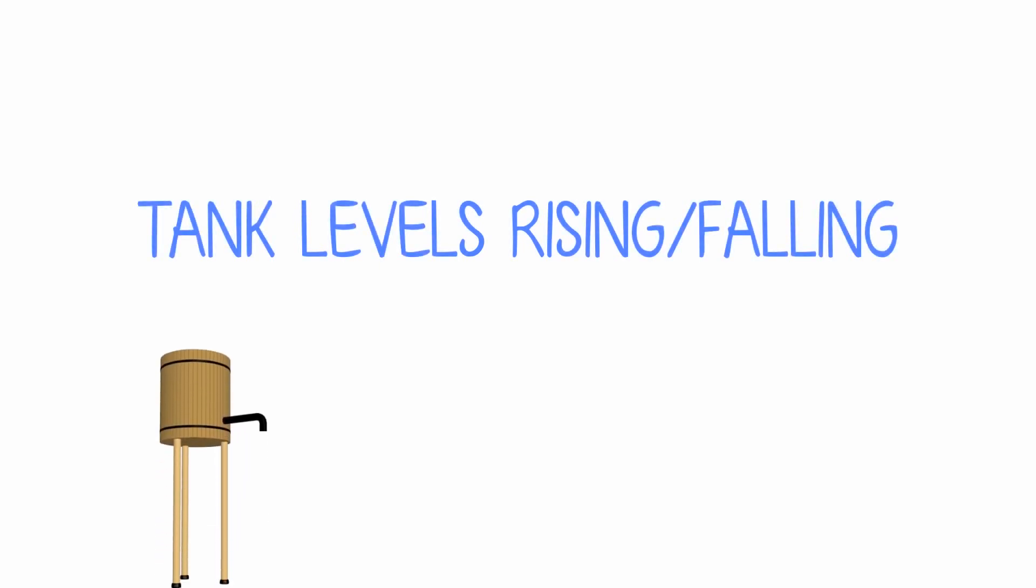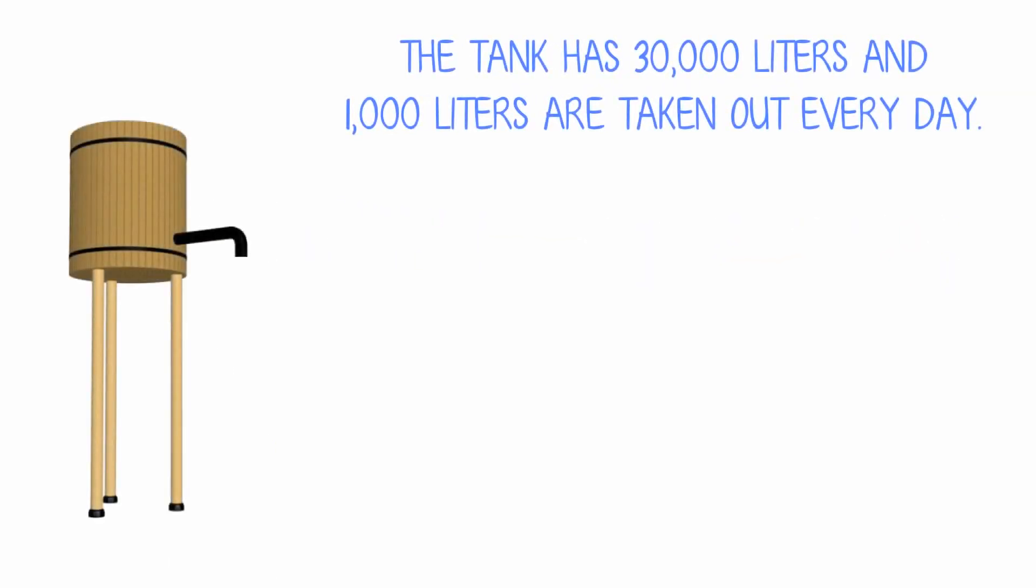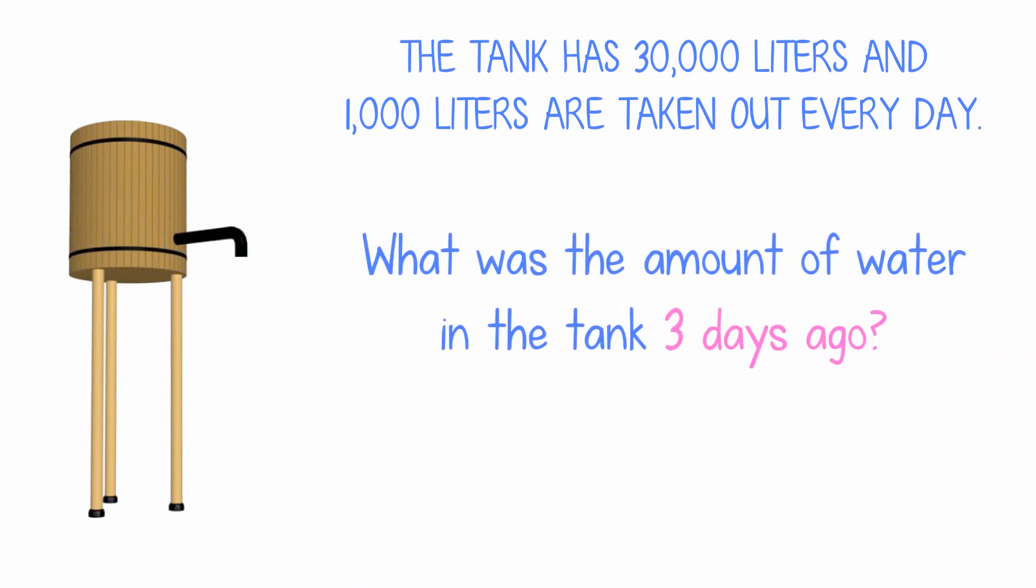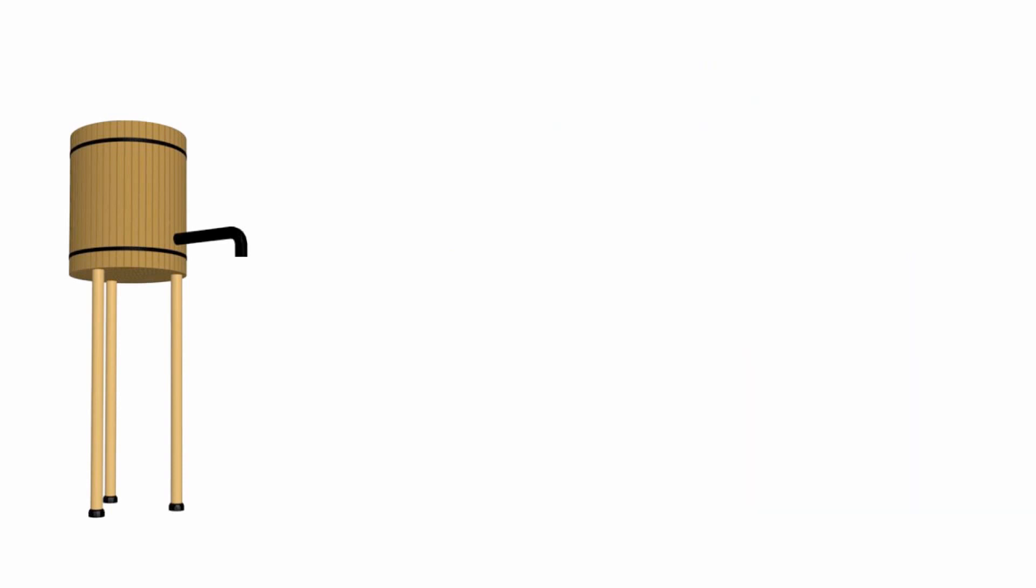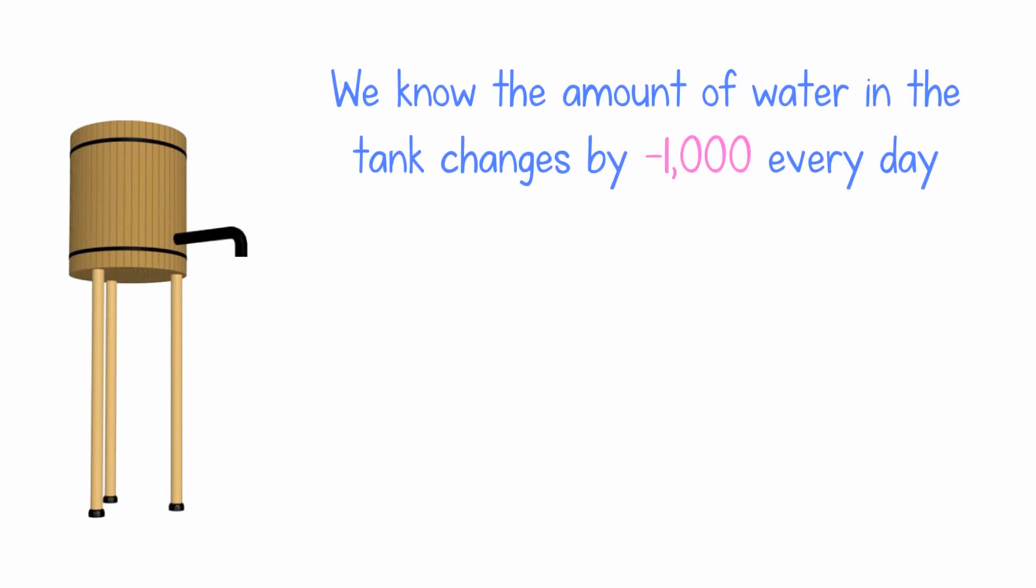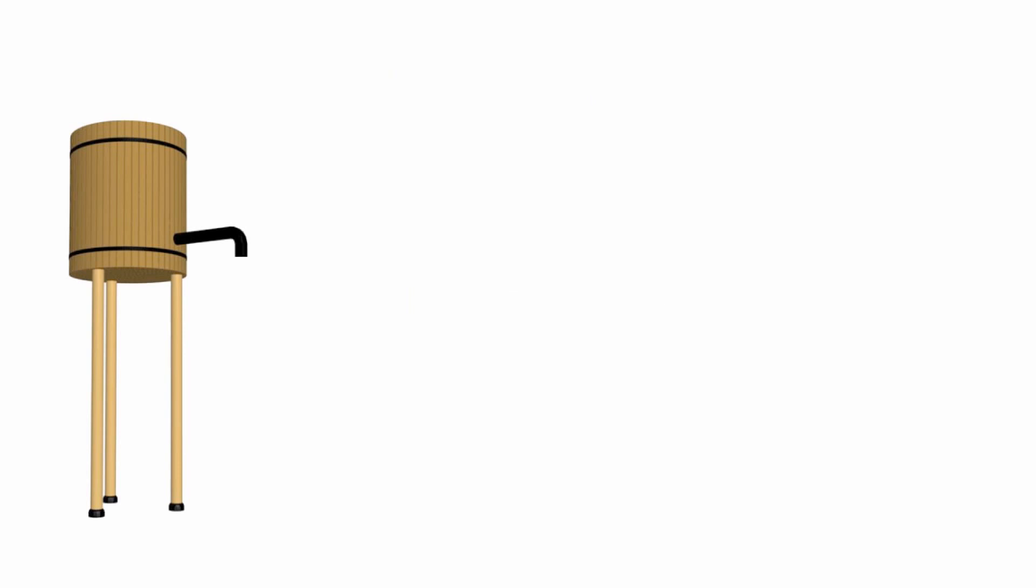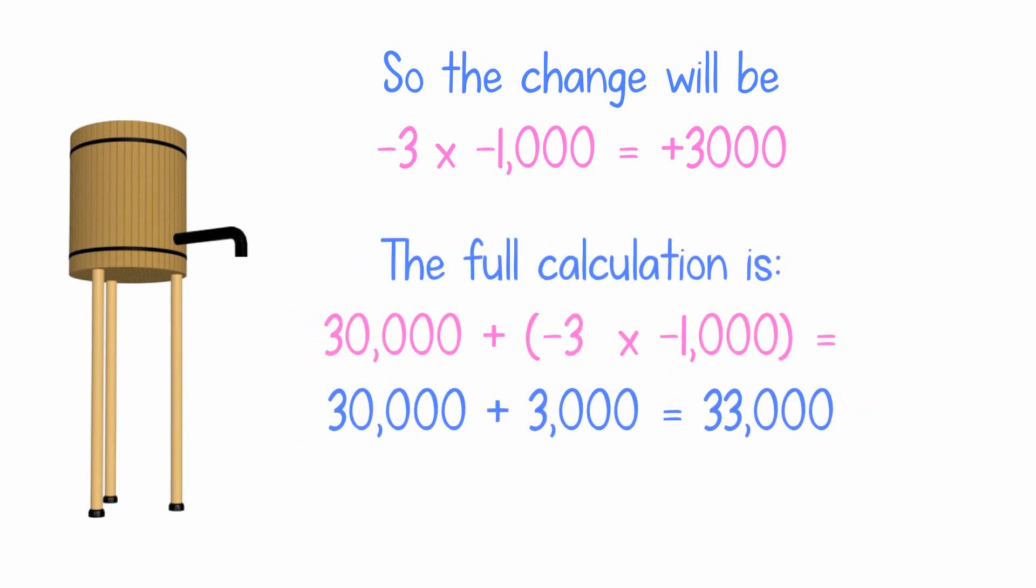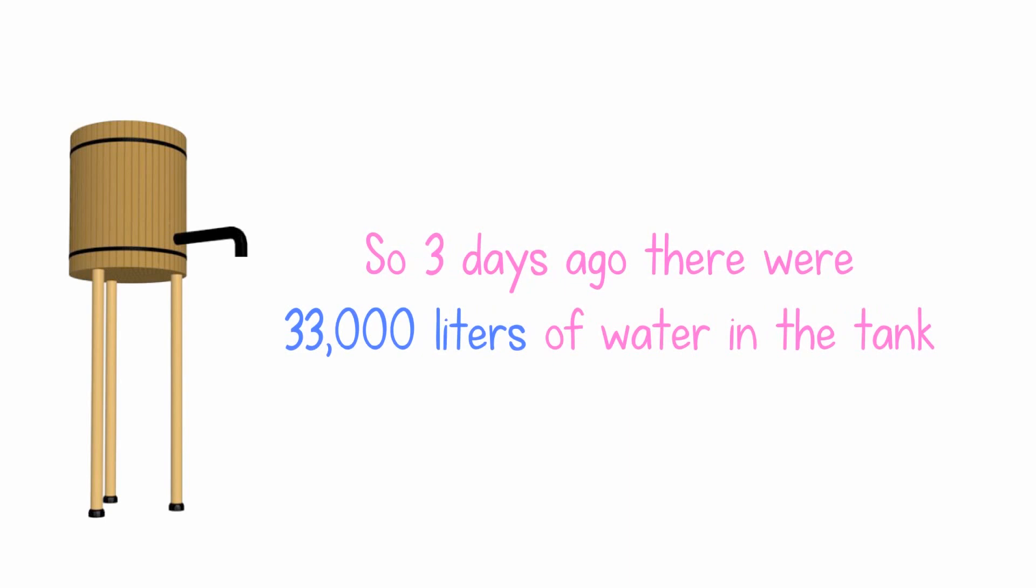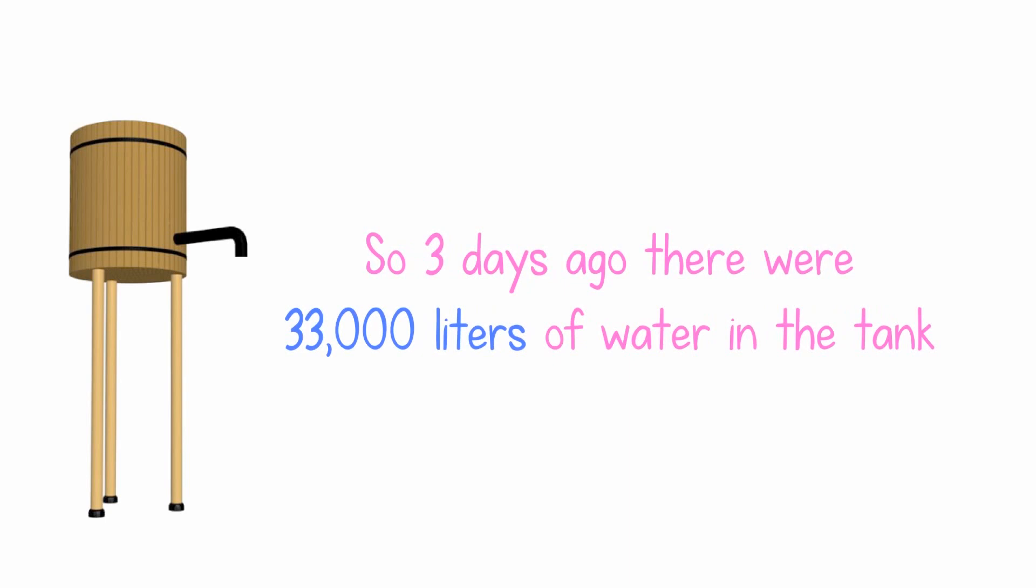Rising and falling levels. The tank has 30,000 liters and 1,000 liters are taken out every day. What was the amount of water in the tank three days ago? We know the amount of water in the tank changes by negative 1,000 every day. We need to subtract that three times to go back three days to answer the question. So the change will be negative 3 times negative 1,000, which equals positive 3,000. So three days ago, there were 33,000 liters of water in the tank.